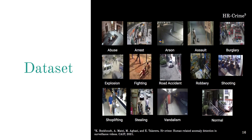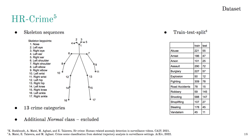For our research, we use the HR Crime dataset. The HR Crime dataset was introduced last year, initially for abnormality detection, but can also be used for crime detection. As can be seen here, the dataset is divided into 13 crime categories with an additional category for normal behavior. The dataset contains skeleton sequences that encode the movement of human body joints from real-world crime surveillance videos. Each skeleton consists of 17 key points representing different body part locations using 2D coordinates, as illustrated in this image.